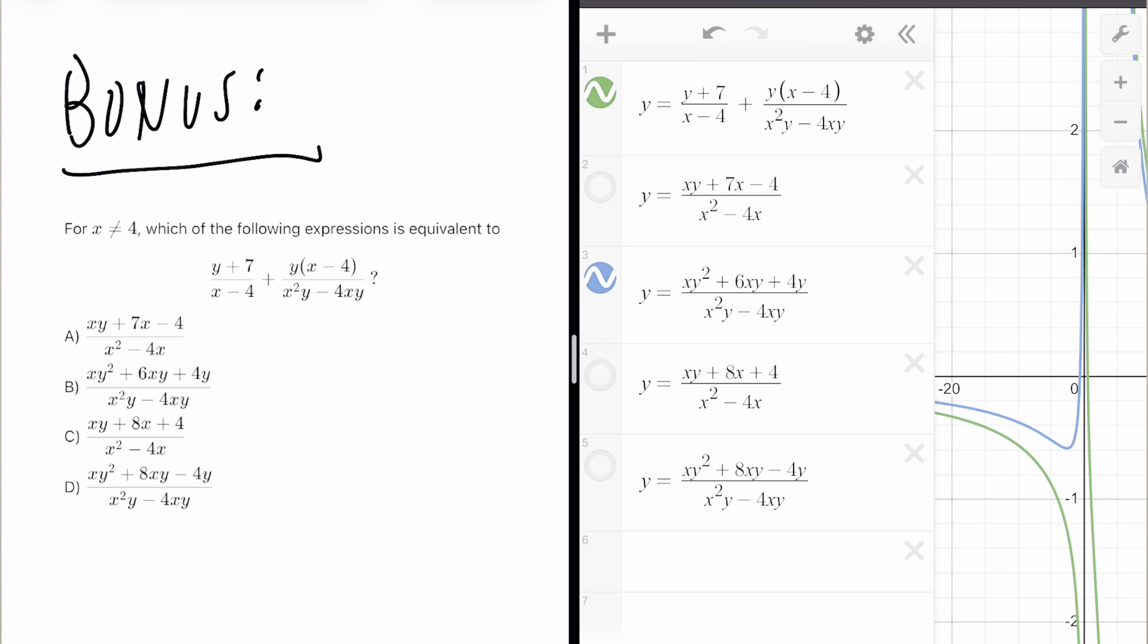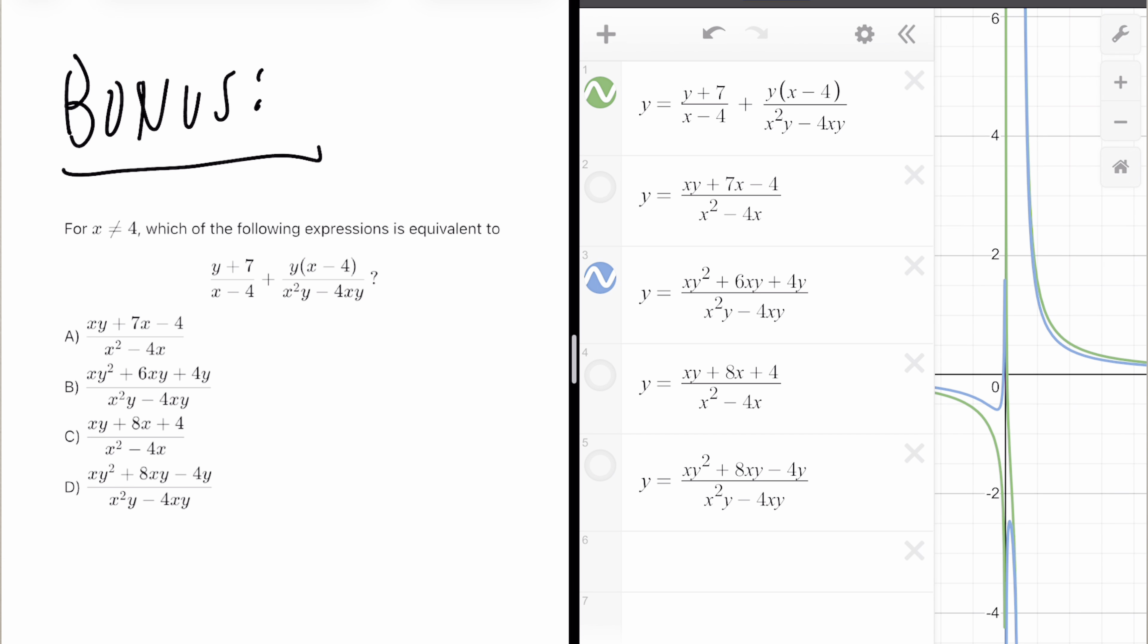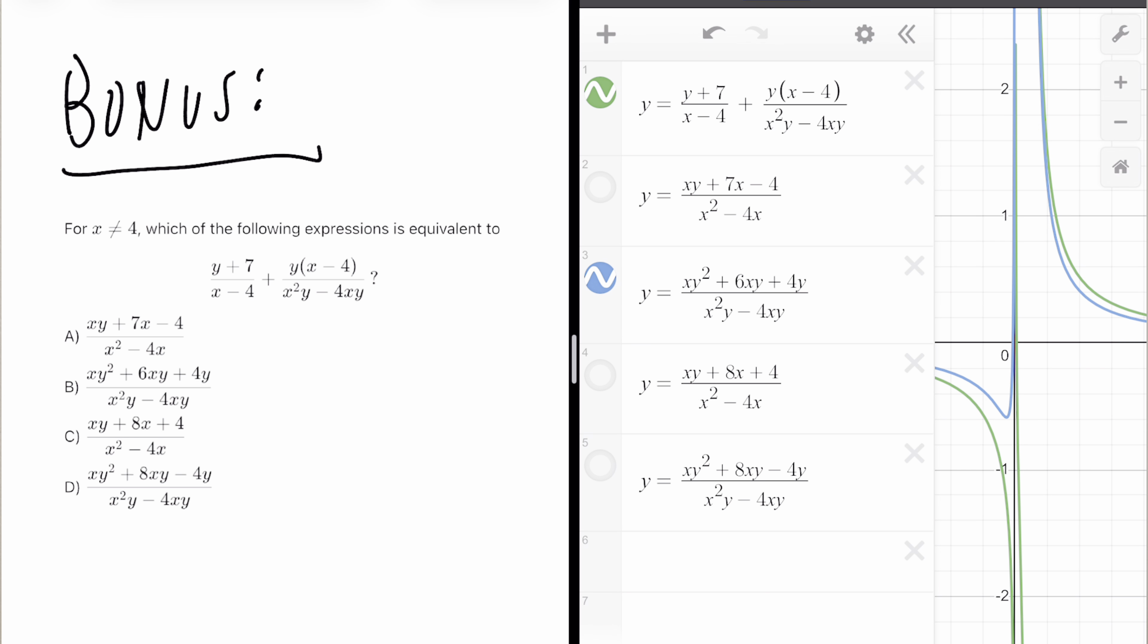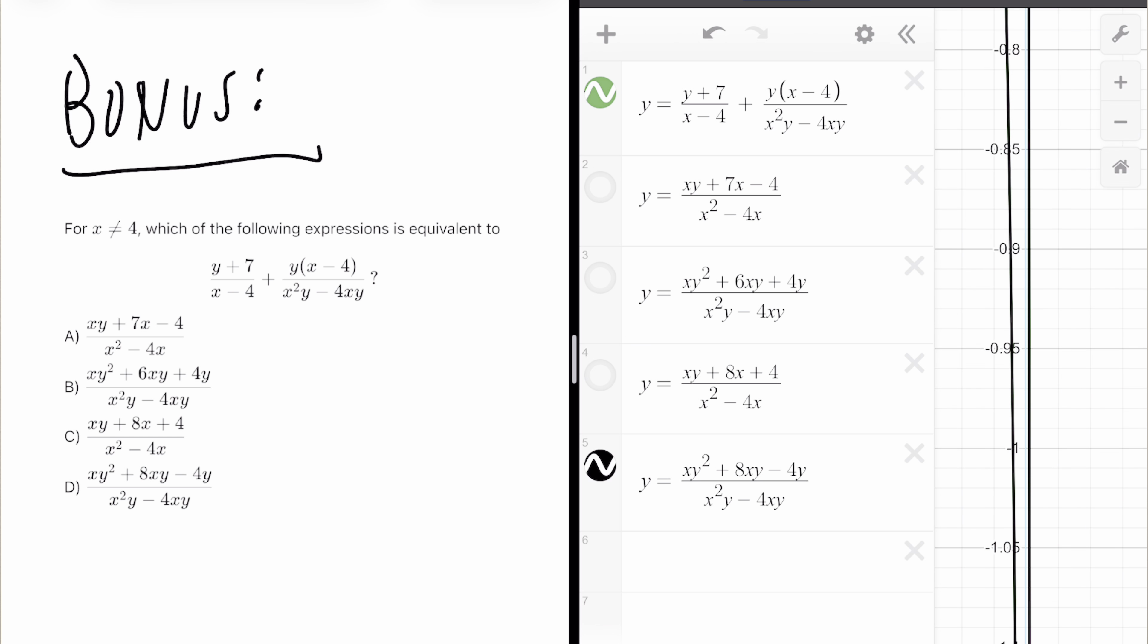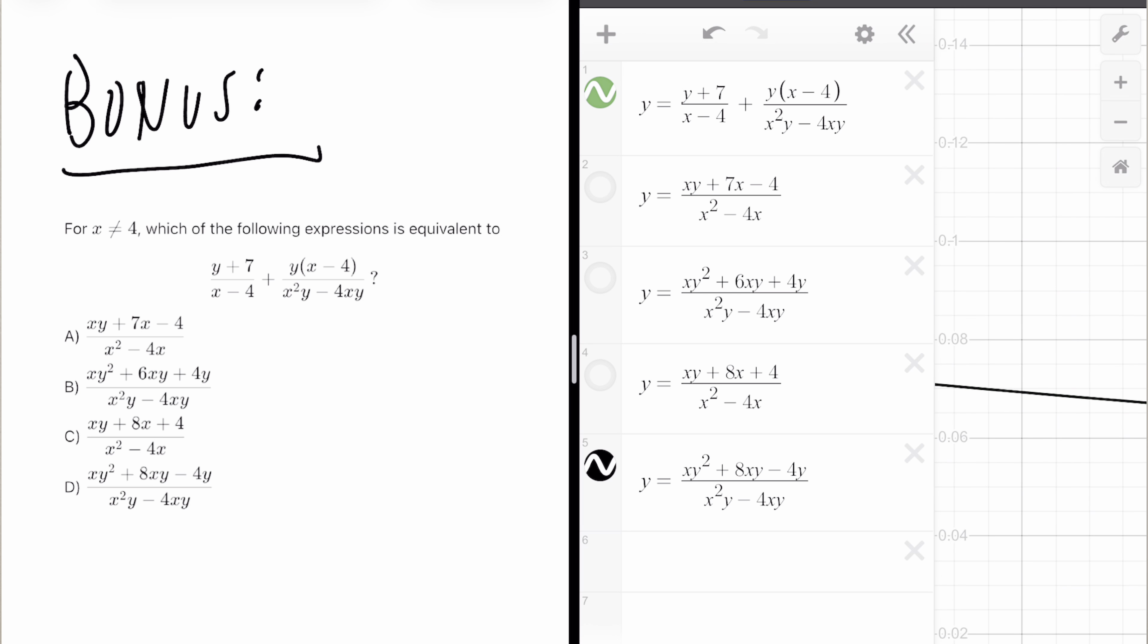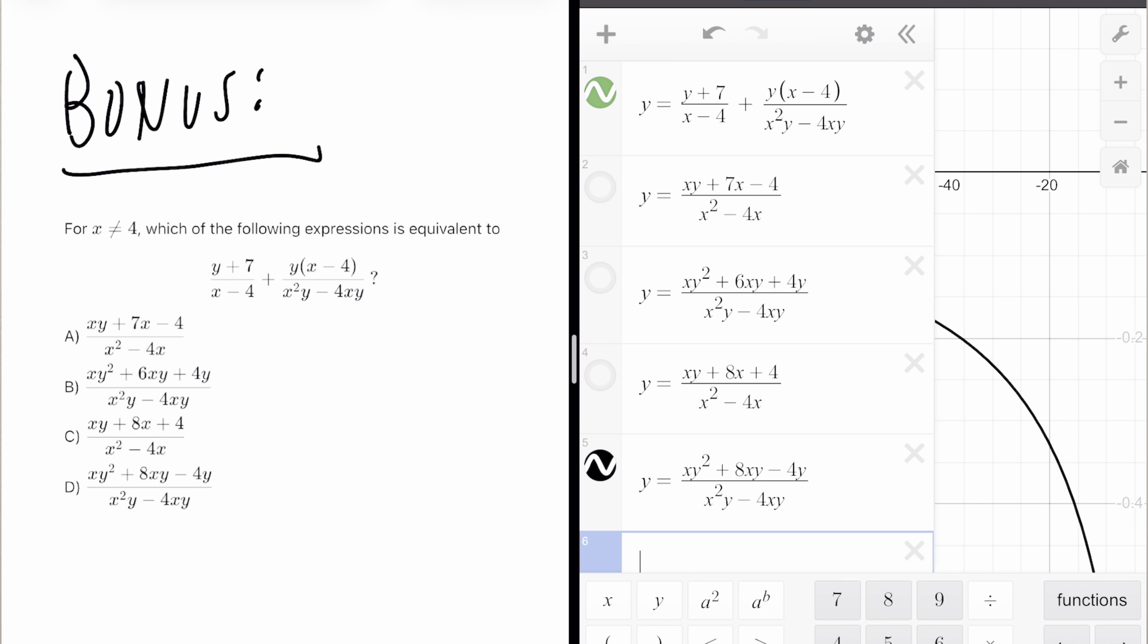I know that this method is not quick, but this is the only way to get this question right every single time. We want to use this trick every single time we see an equivalence question.